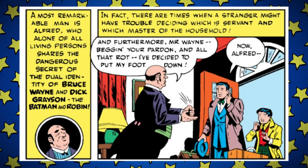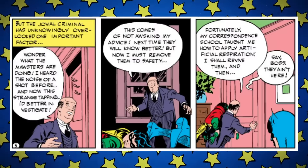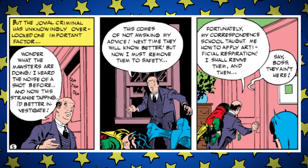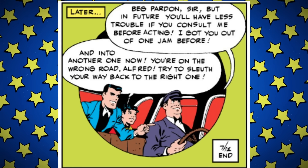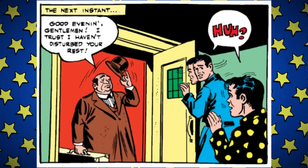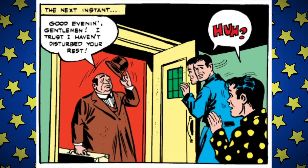The Alfred who debuted in comics was unlike the version most are used to seeing. He was short, rotund, and had a lot of traits present in comic relief side characters of the time — a bit bumbling, causing problems but getting out of them through tomfoolery and shenanigans. Alfred came over to be a butler to Bruce Wayne and his ward Dick Grayson.